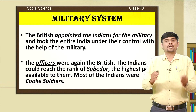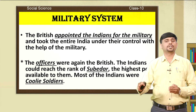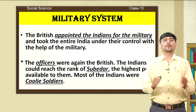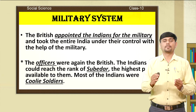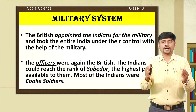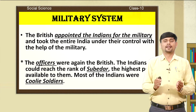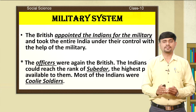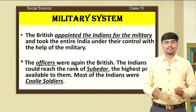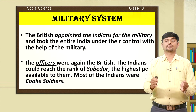The high positions in the military system were all given to Europeans. The Indians could reach only the rank of Subedar — the highest post available to the Indians. Most of the Indians who worked in the military were called coolie soldiers. They had to work for the British officers and were served for various other purposes of the British officers, which is why they were also called coolie soldiers.